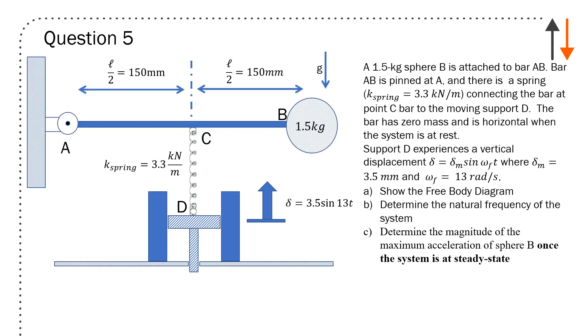Here's a fun one. The final question we ask on MIE 100 exams is always a vibration question. We have a massless bar AB, a spring attached to the center of that massless bar, which is CD. k of spring is 3.3 kilonewtons per meter. Lengths are given as 150 millimeters. Total length AB is 300 millimeters. g is acting down, and the mass of B is 1.5 kilos—it's just a sphere. We have a forcing of 3.5 sine 13t.